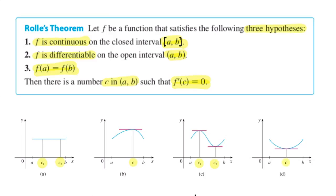In Rolle's Theorem, you should try this yourself — stop the video right now. Draw a function that satisfies these hypotheses: pick a spot on the y-axis, make your function value equal at A and B, then starting at A comma f(A), draw a continuous differentiable function. It can wiggle, it can do a lot of stuff, but it's got to be continuous and end at B. You cannot avoid having places where the derivative is zero.